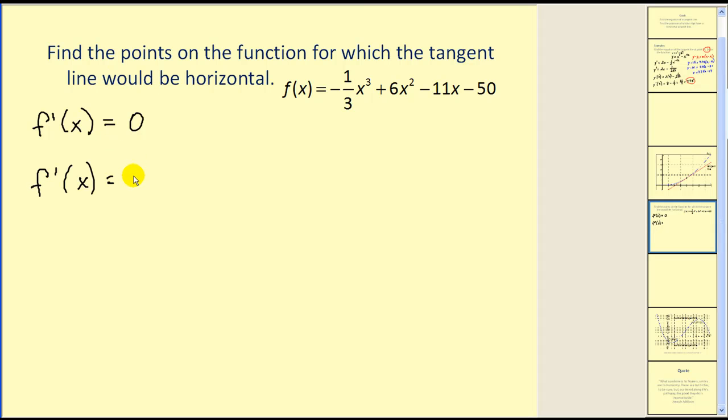So the derivative of negative one-third x cubed would be negative one-third times the derivative of x cubed, which would be 3x squared, plus six times the derivative of x squared, that would be 2x, minus 11 times the derivative of x, that would be 1, and then minus the derivative of 50, that would be 0.